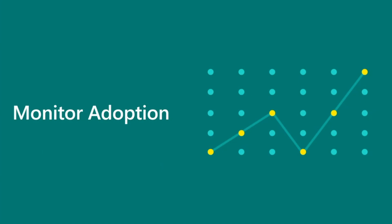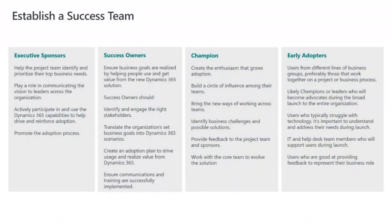First, let's talk about user adoption. When you start thinking about transitioning from your web client to Unified Interface, one of the key aspects of success is thinking about user adoption — how you're going to monitor it and how you can improve it. The first thing you want to do is establish your success team.